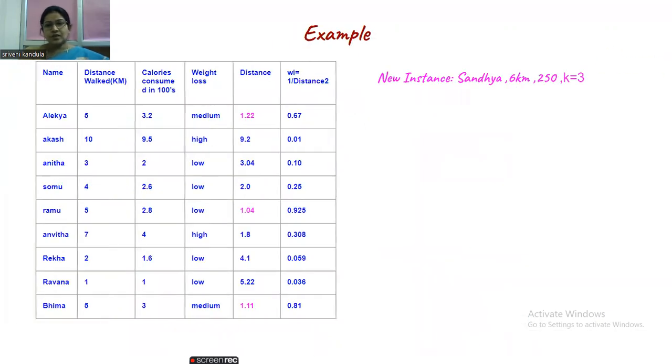Now coming to the new instance. Here we have our new instance, the name is Samzia, distance walked is 6 kilometers, and the calories she consumed is 2. K value is given as 3. This new instance has to be classified, meaning you have to assign one target label to this. For simplicity of calculation, I converted the calories from hundreds to decimal points. Here 3.2 is 320 calories, 950 calories, 200, 260 like that. When calculating the distance using Euclidean distance, this 250 also you should convert by dividing with 100, so it becomes 2.5.